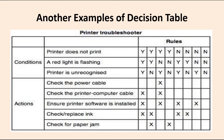Let's look at a practical example: the printer troubleshooter. The conditions here are: printer does not print, a red light is flashing, and printer is unrecognized. The actions when these conditions arise include: check the power cable, check the printer-computer cable, ensure the printer software is correctly installed, check or replace the ink, and check if any paper is jammed.